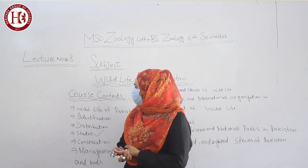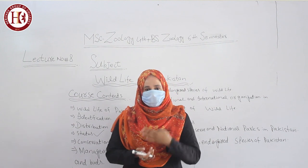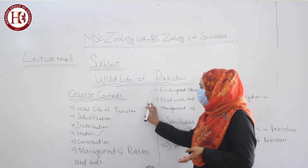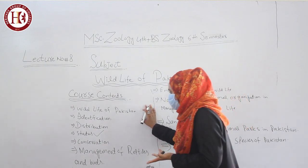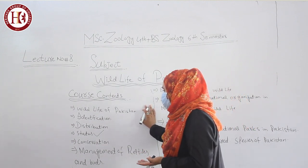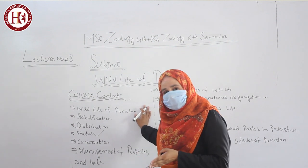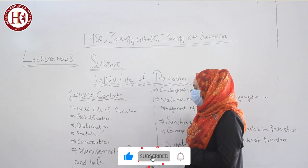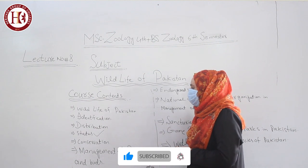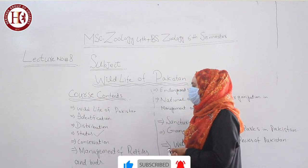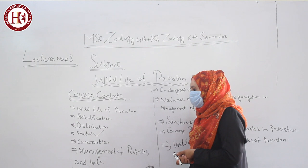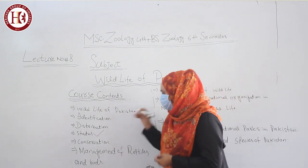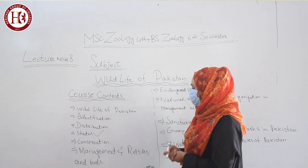Let me repeat the course contents introduction thoroughly. Wildlife of Pakistan — you have to define what wildlife actually is. Wildlife includes all different varieties and species of birds, mammals, reptiles, and plants. Then identification of wildlife species: which species does wildlife include — birds, mammals, reptiles — and how many species are there, where are they distributed, and what is their status.